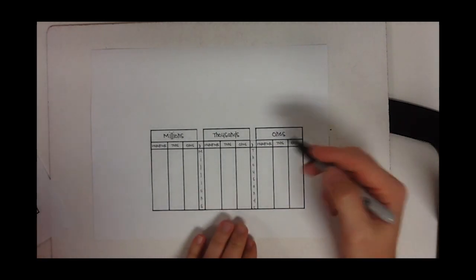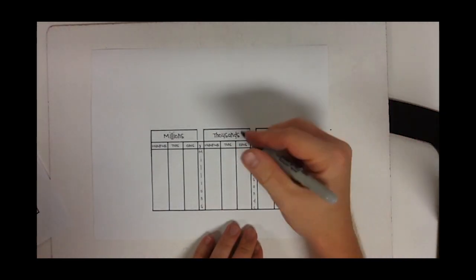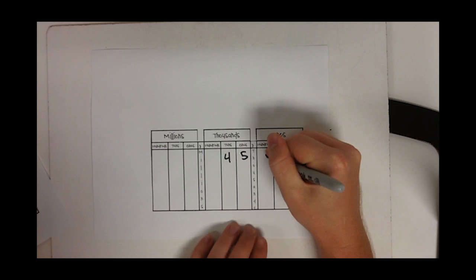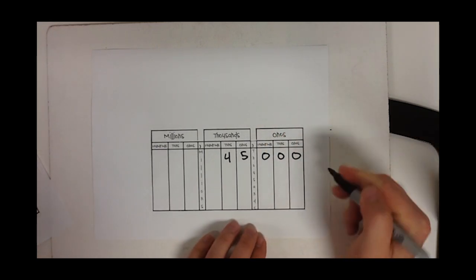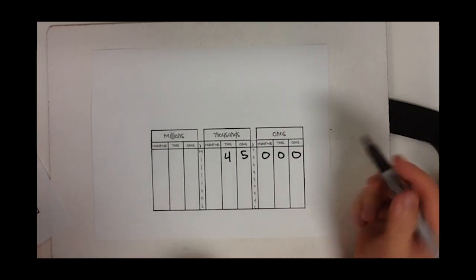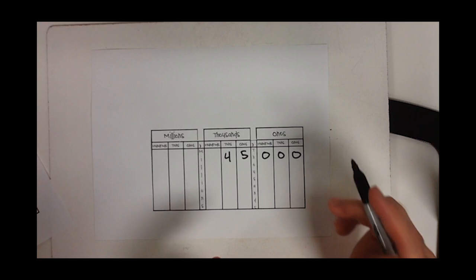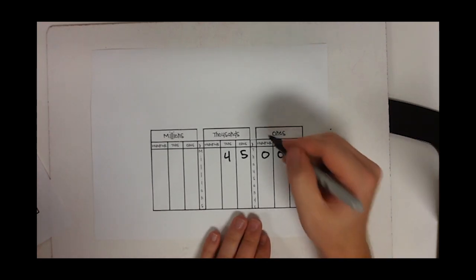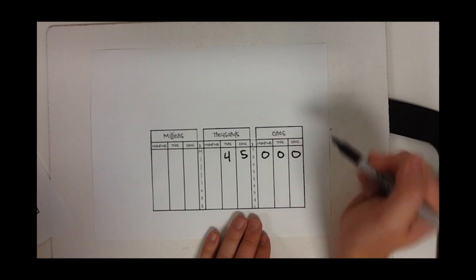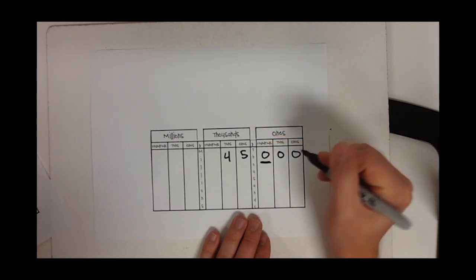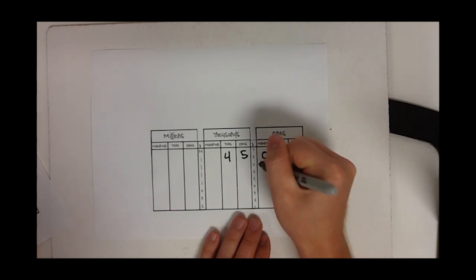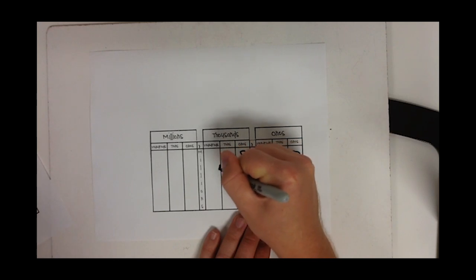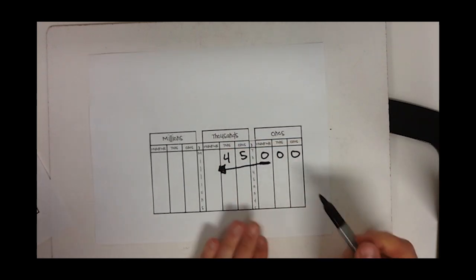Sometimes you might see it where they give you the number. So let's take 45,000, and they're going to ask you how many hundreds are there. They're telling you to go to the place value, which is the hundreds. So how many hundreds are in 45,000? I'm going to the hundreds, I'm going to underline this, and here's my trick: I'm going to underline that and draw an arrow to the left, and everything to the left is my answer.